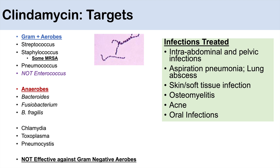Some infections we use clindamycin to treat include intra-abdominal and pelvic infections, aspiration pneumonia, and lung abscesses. We can also use it for skin and soft tissue infections, and for osteomyelitis — because, as mentioned, it has increased bone penetration, making it very effective there. It can also be used for acne and oral infections because it covers anaerobes well.